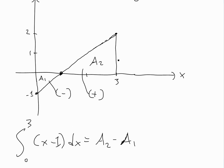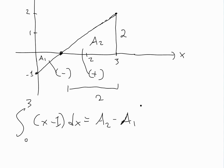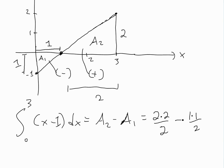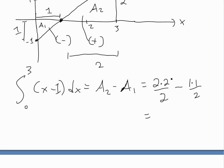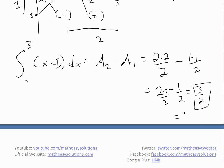Area A2 is a triangle with base two and height two: two times two divided by two equals two. Area A1 is a triangle with base one and height one: one times one divided by two equals one half. So the integral equals two minus one half, which is four over two minus one over two, giving three over two, or 1.5. That's our answer.